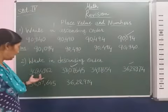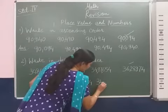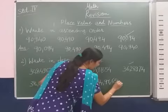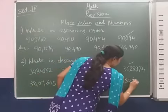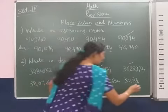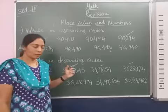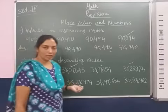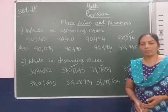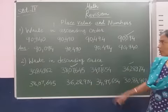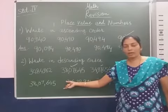After that, the highest among the remaining two numbers is 34,97,654, and the last smaller number is 30,84,962. So students, you have to put the comma first so you can easily understand the number and its place. Then, on the basis of place value, we can compare easily. In ascending order: smaller to greater. In descending order: we put the numbers greater to smaller.